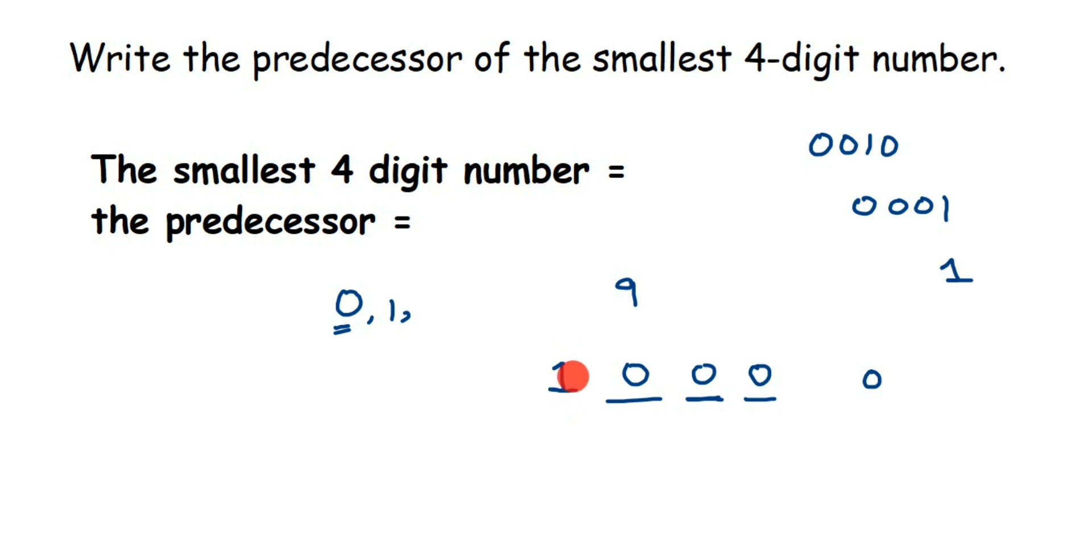The smallest four-digit number is 1000. Now we have to find out its predecessor, which means one number before that. If you know the number, you can directly write it down. If you don't know, you can subtract one from it.